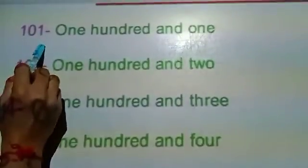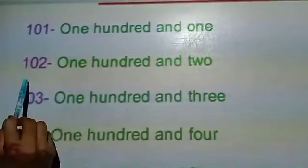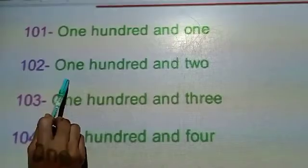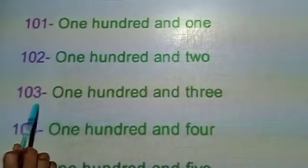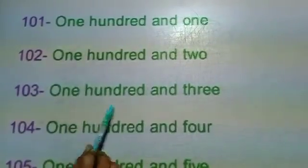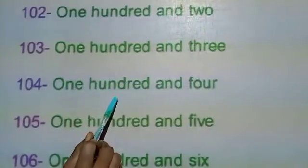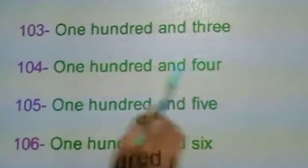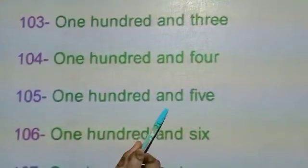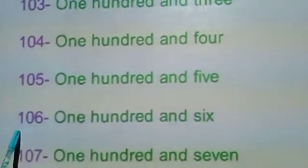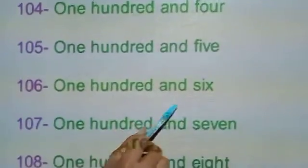One zero one — one hundred and one. One zero two — one hundred and two. One zero three — one hundred and three. One zero four — one hundred and four. One zero five — one hundred and five. One zero six — one hundred and six.